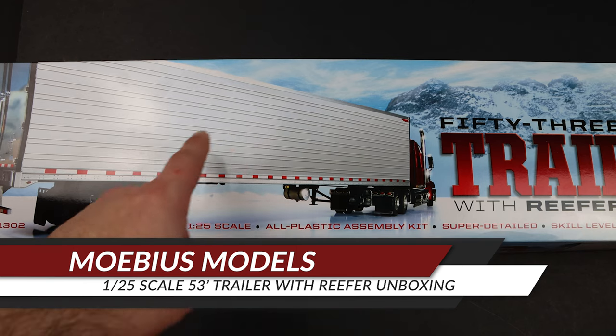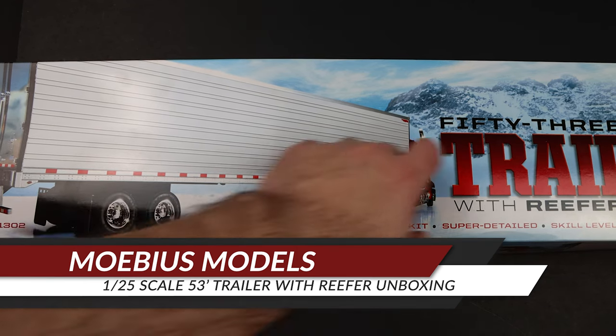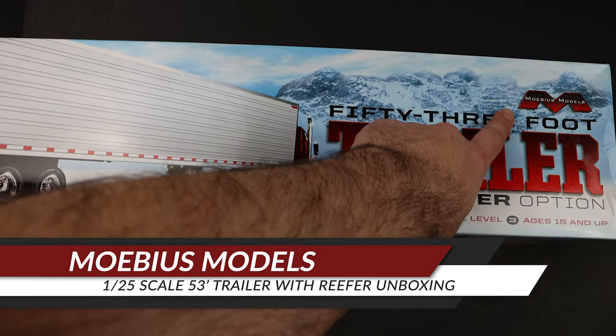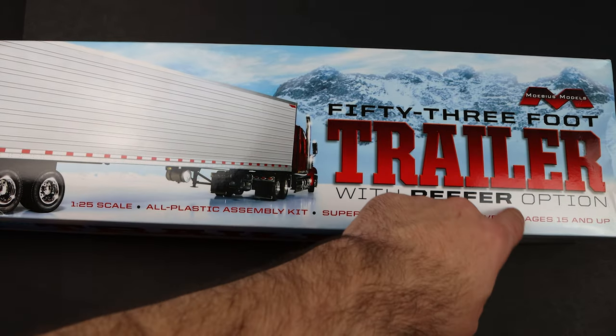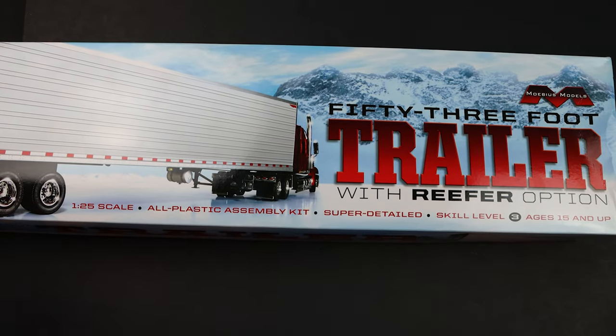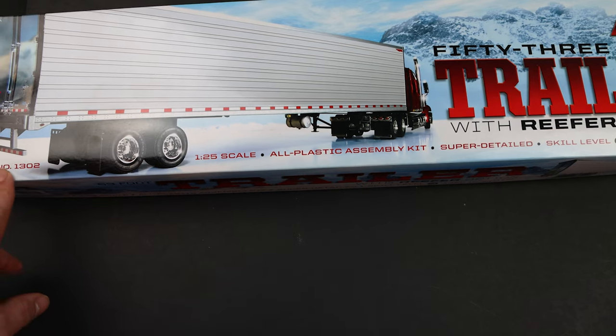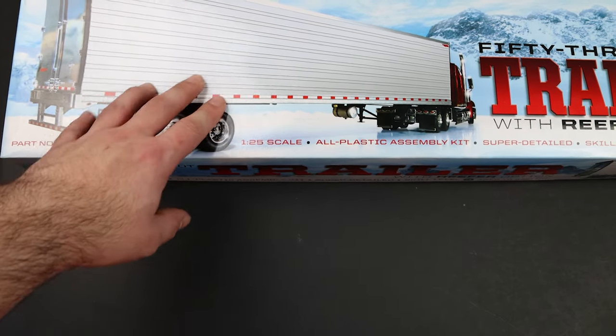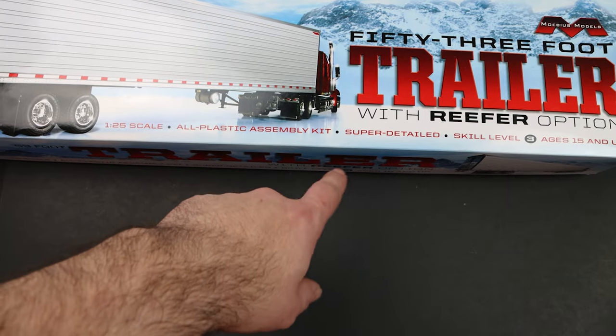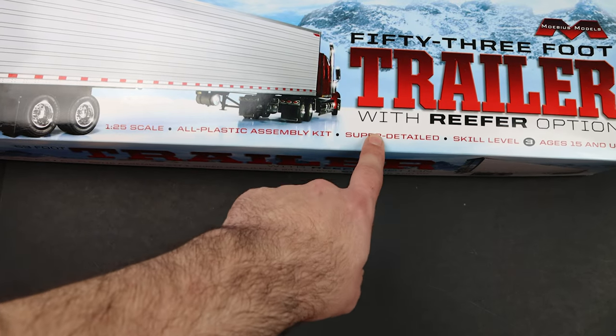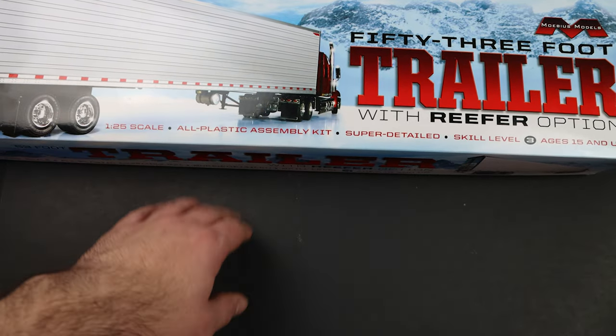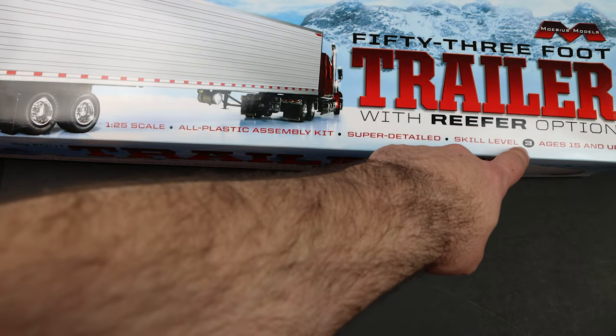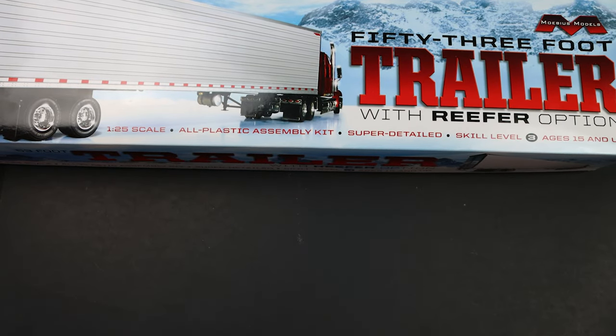Alright, so let's start off with the box. As you can see, it is a Mobius Models 53-foot Trailer with the Reefer option. It has part number 1302, 125th scale. Obviously, it's a kit. Super detailed. I kind of disagree with that. I mean, it's a trailer. There's not much to it. But hey, they say level 3, ages 15 and up.